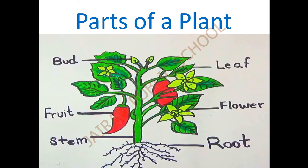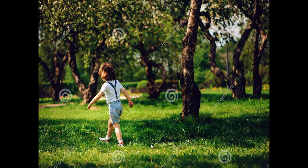So the parts are: bud B-U-D, fruit F-R-U-I-T, stem S-T-E-M, root R-O-O-T, flower F-L-O-W-E-R, leaf L-E-A-F. These are the parts of the plants. Totally we can see six parts. The most beautiful part is the flower, and the root is seen under the soil. All the remaining five parts above the soil are called as the shoot system.